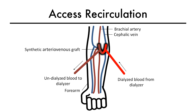Access recirculation occurs when dialyzed blood returning to the body re-enters the extracorporeal circuit through the arterial needle and therefore mixes with the undialyzed blood exiting the body. This decreases the urea concentration in the pre-filtered blood, reduces the urea concentration gradient between blood and dialysate within the dialyzer, and therefore reduces dialysis efficiency.